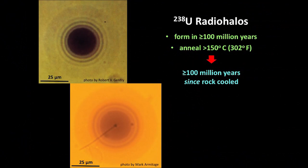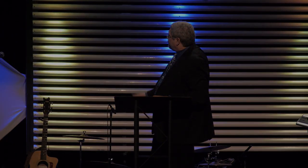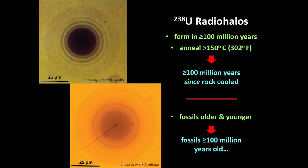When you see a halo in a rock, it means it's been a hundred million years since it was hot. It's not telling you how old the rock is — only how long the rock has been cold. The rocks are actually older than that. So you've got a hundred million years since the rock cooled down. And it gets worse, because there are fossils we've found that are older than these rocks and younger than these rocks.